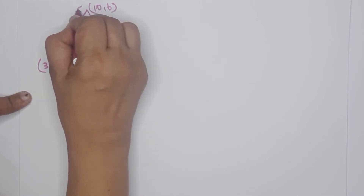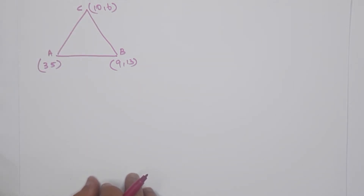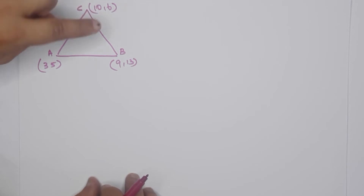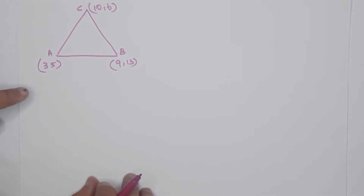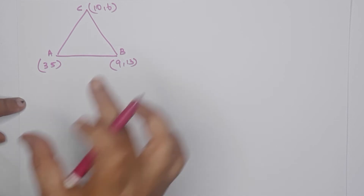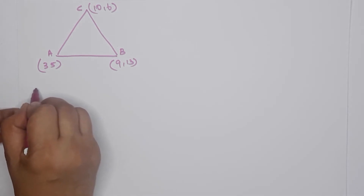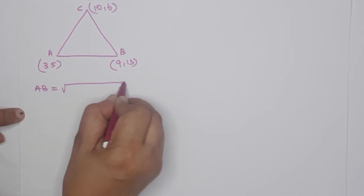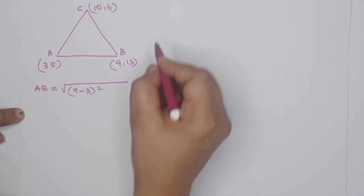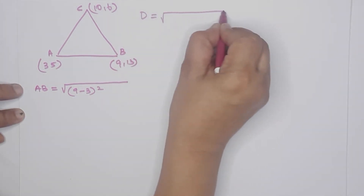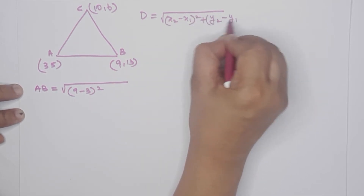We name the vertices A(3, 5), B(9, 13), C(10, 6). To prove the triangle is isosceles, two sides must be equal. We use the distance formula: distance = √[(x2 − x1)² + (y2 − y1)²]. Let's find distance AB: root of (9 minus 3)² plus (13 minus 5)².